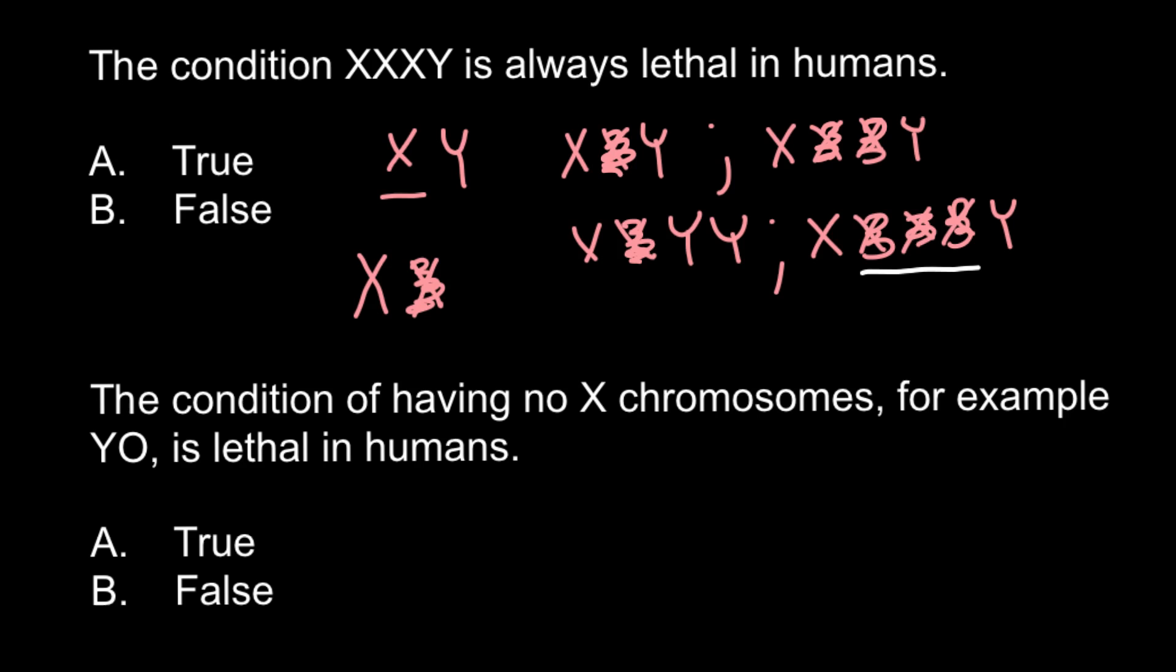For example, here would be three Barr bodies in each cell. Here would be one Barr body. And here two. And here would have one Barr body. And normal male's genotype doesn't have any Barr bodies at all.